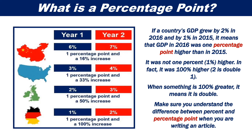If a country's GDP grew by 2% in 2016 and 1% in 2015, it means that GDP in 2016 was one percentage point higher than in 2015. It was not 1% higher; in fact it was 100% higher. 2 is double 1. When something is 100% greater, it means it is double.